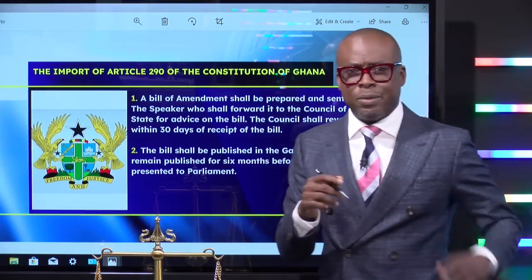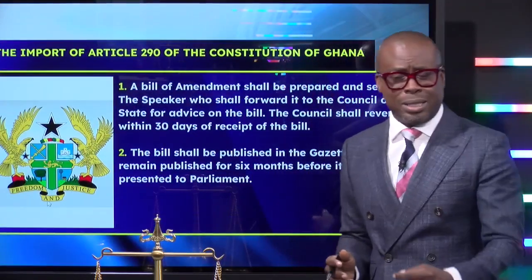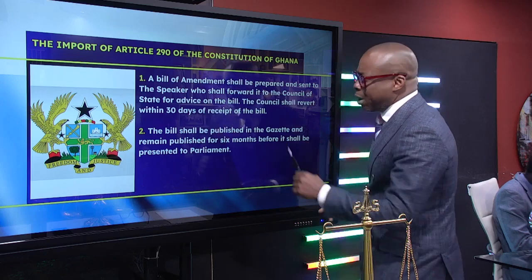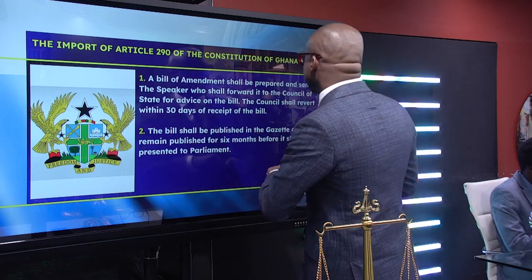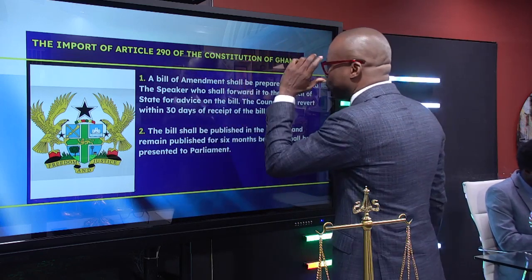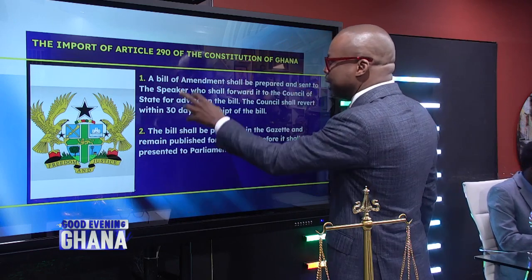Let's look at the repeal of Article 71, the repeal process. We'll come back to the questions that we want to ask Professor Mills as we wrap up on this one. This is Article 290 of the Constitution — this is how to repeal it.